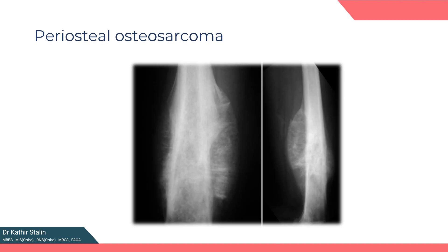The intermediate-grade periosteal osteosarcoma deserves attention as well. It manifests in the diaphysis of the long bone with a characteristic radiographic appearance of a sunburst-type lesion atop a saucerized cortical depression. Its chondroblastic histology places it between low-grade parosteal osteosarcoma and high-grade intramedullary osteosarcoma in terms of prognosis — that is why it is classified as intermediate-grade. Preoperative chemotherapy, surgical resection, and maintenance chemotherapy form the preferred treatment approach, with a 10% to 15% risk of pulmonary metastasis.